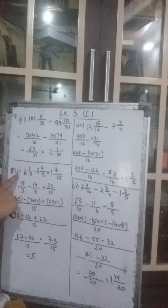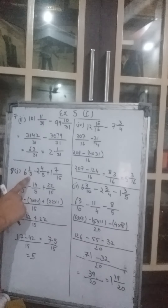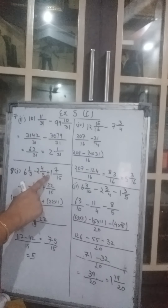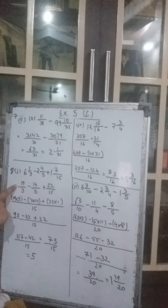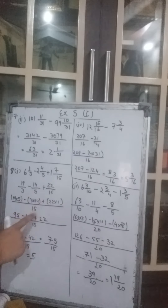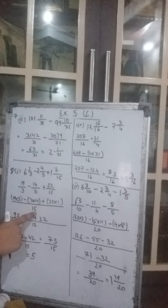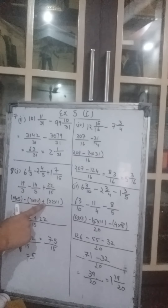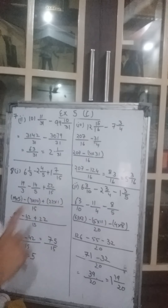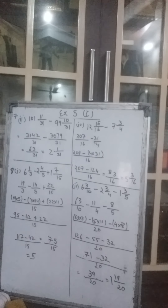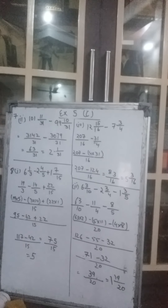Now let's do the 8th question, first and second parts. It says 1 whole 1 upon 3 minus 2 whole 4 upon 5 plus 1 whole 7 upon 15. We have converted them into improper fractions. The LCM is 15. 15 divided by 3 gives 5, 5 multiplied by 90 — minus 15 divided by 5 gives 3, 3 into 14 — plus 22 comes as it is. So it is 95 minus 42 plus 22 upon 15.